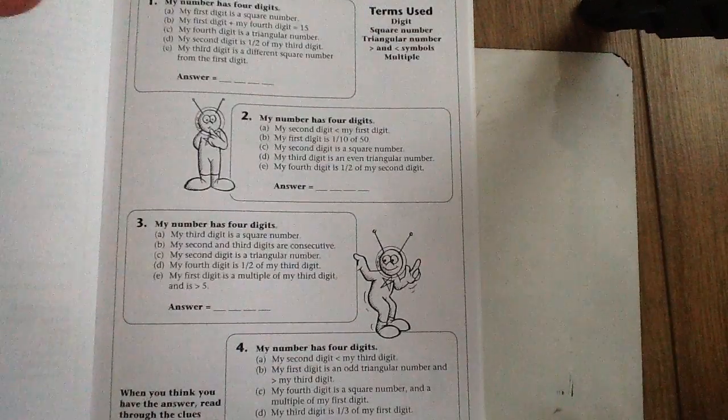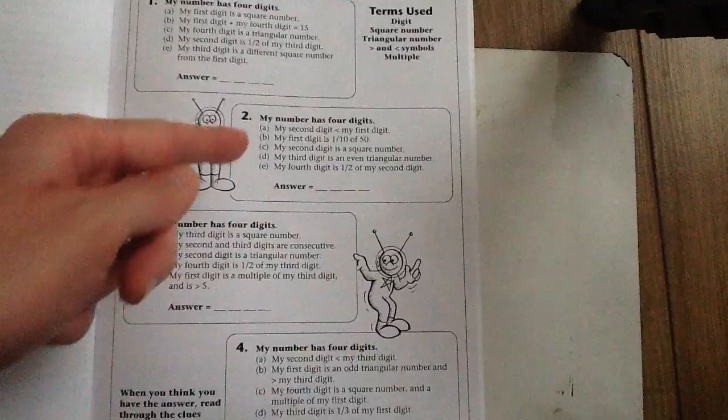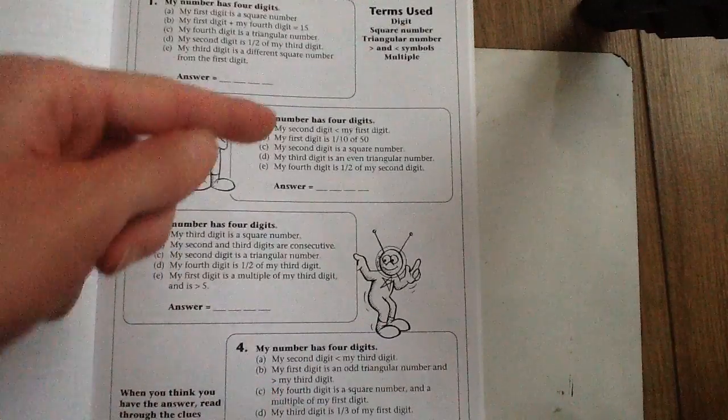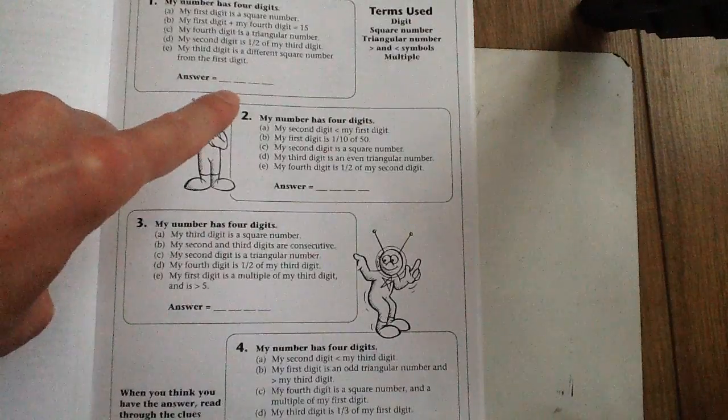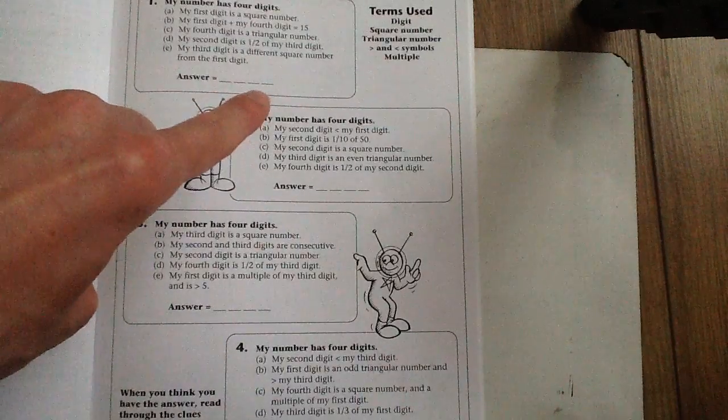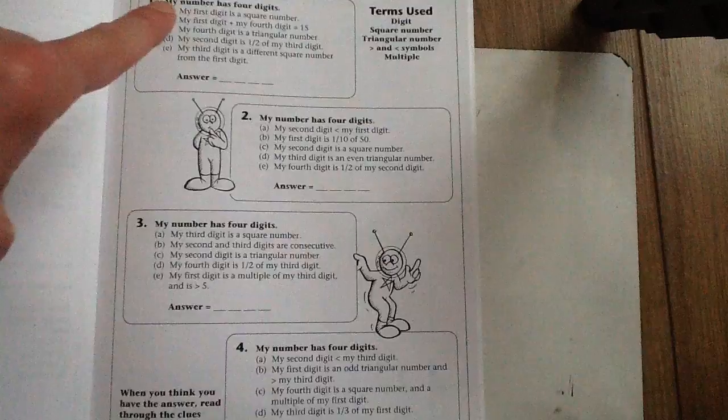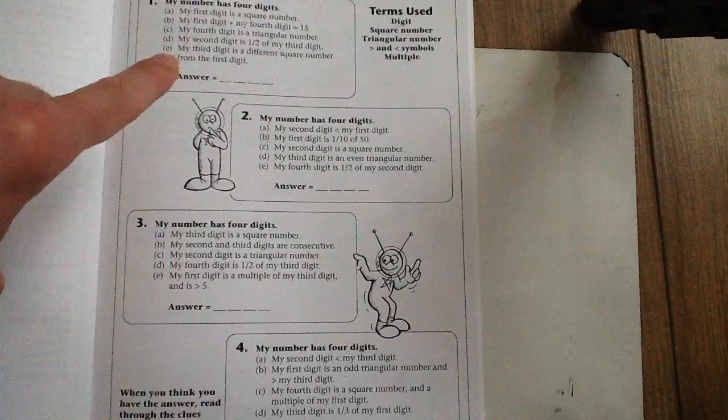So here you can see there are four parts, four different parts to the challenge. And each time what you're trying to do is come up with a number as an answer. And you've been given lots of clues to get to the number.